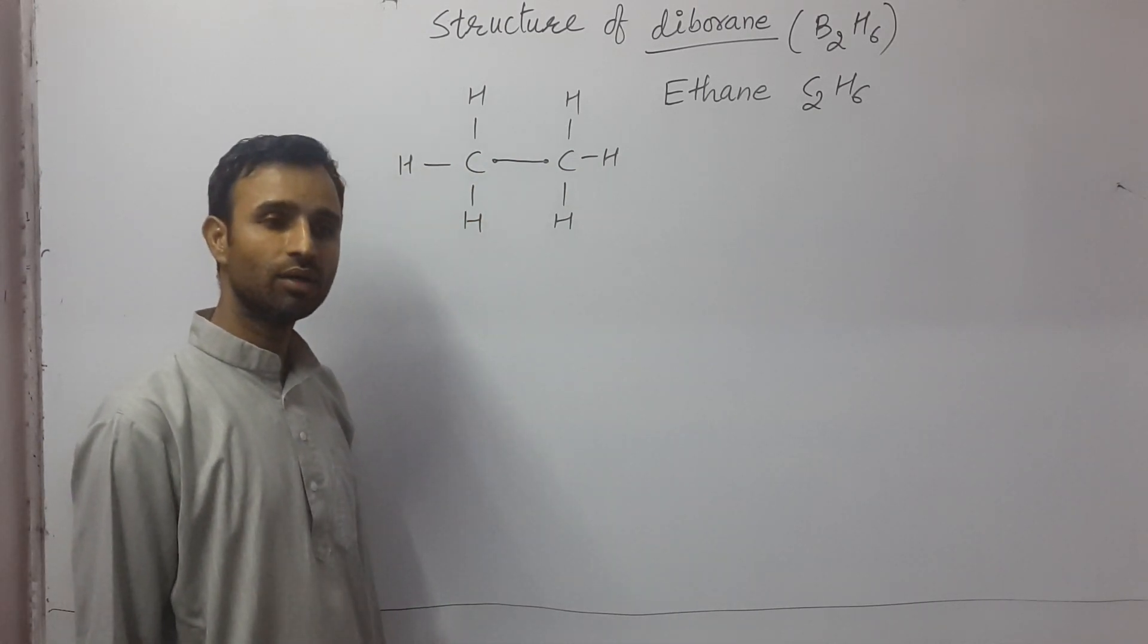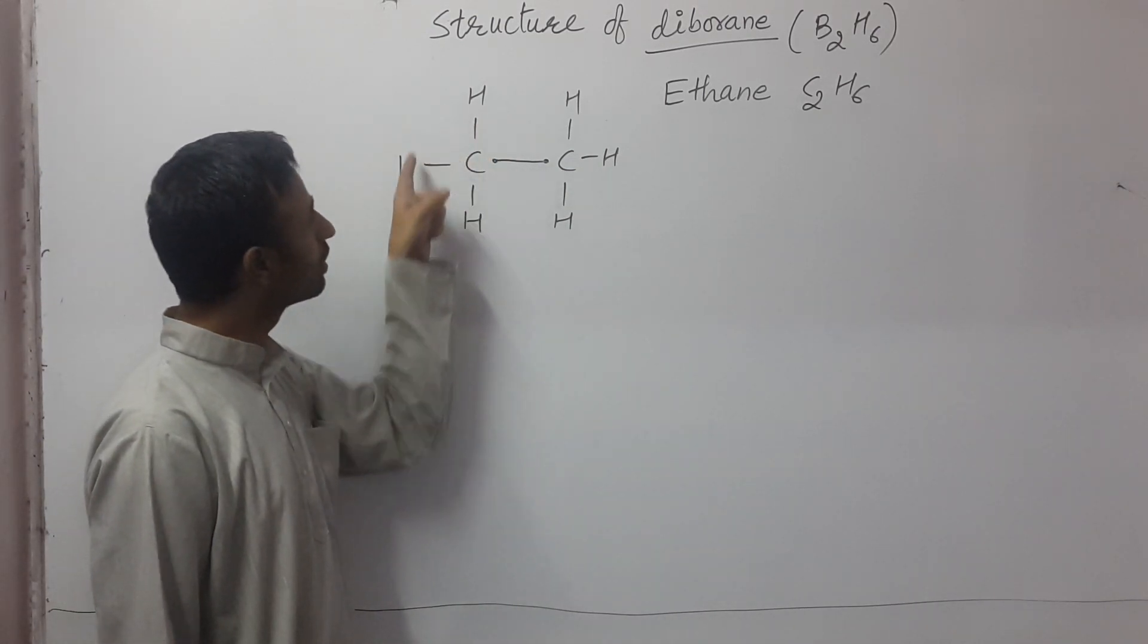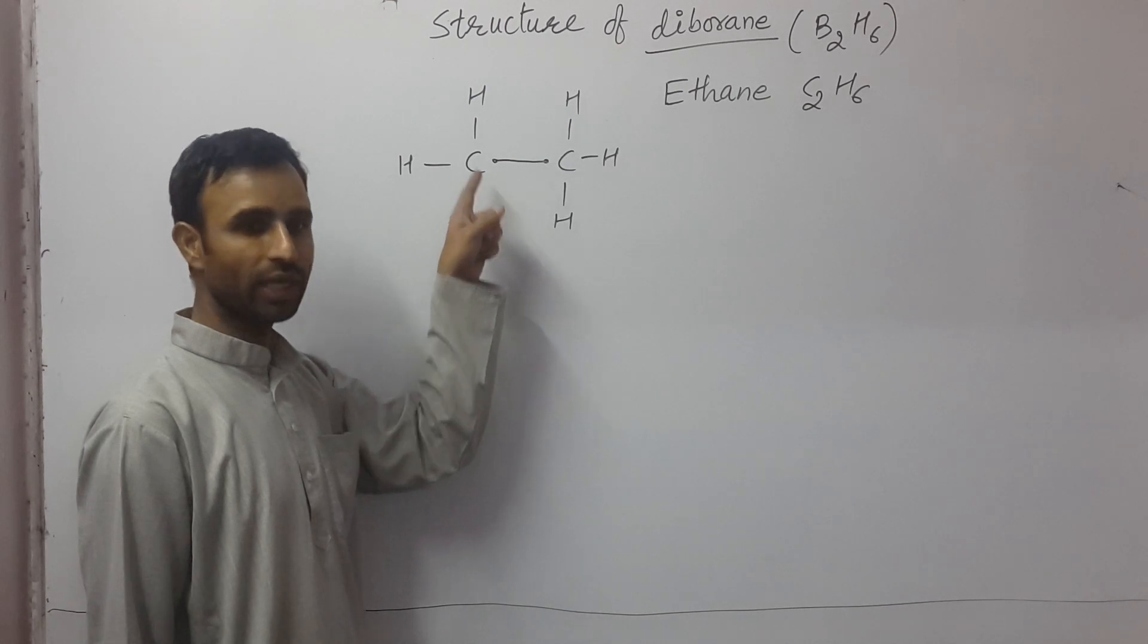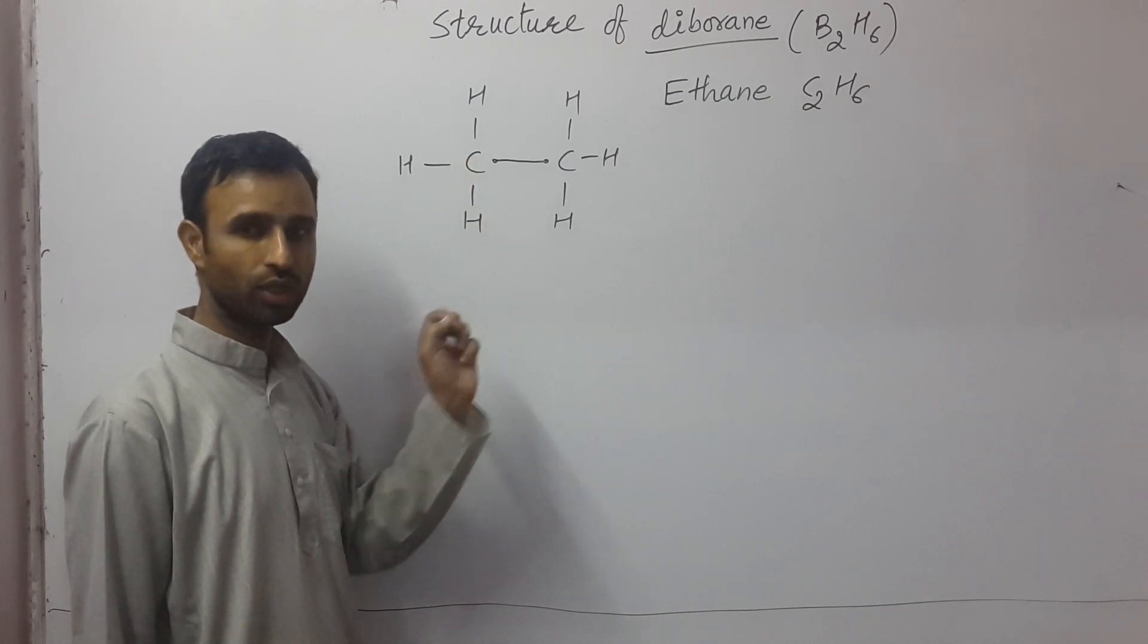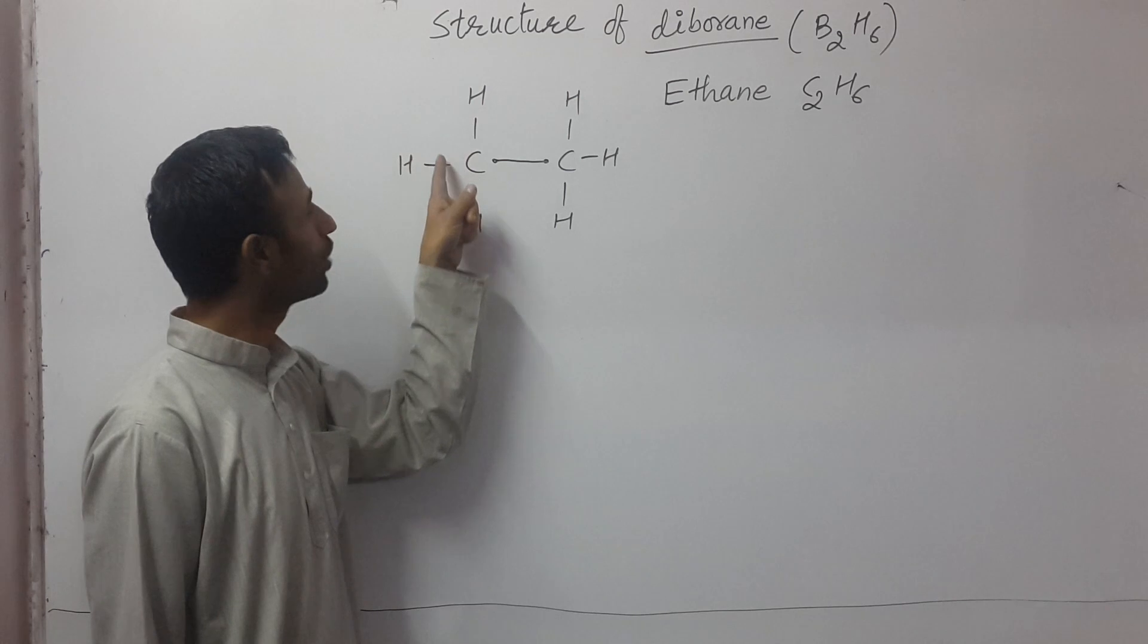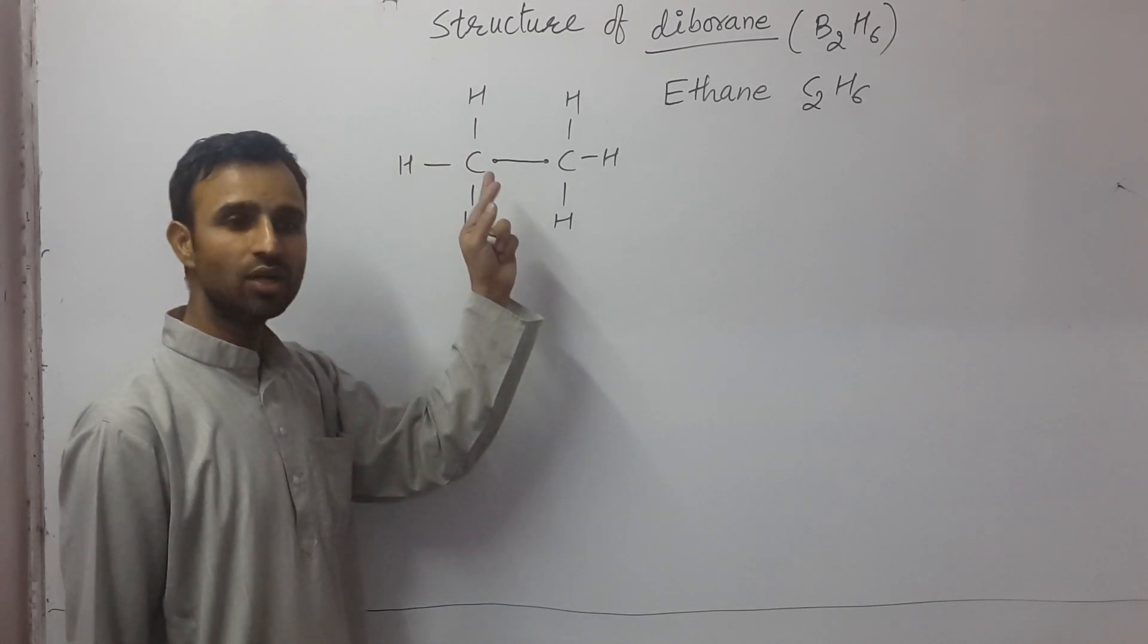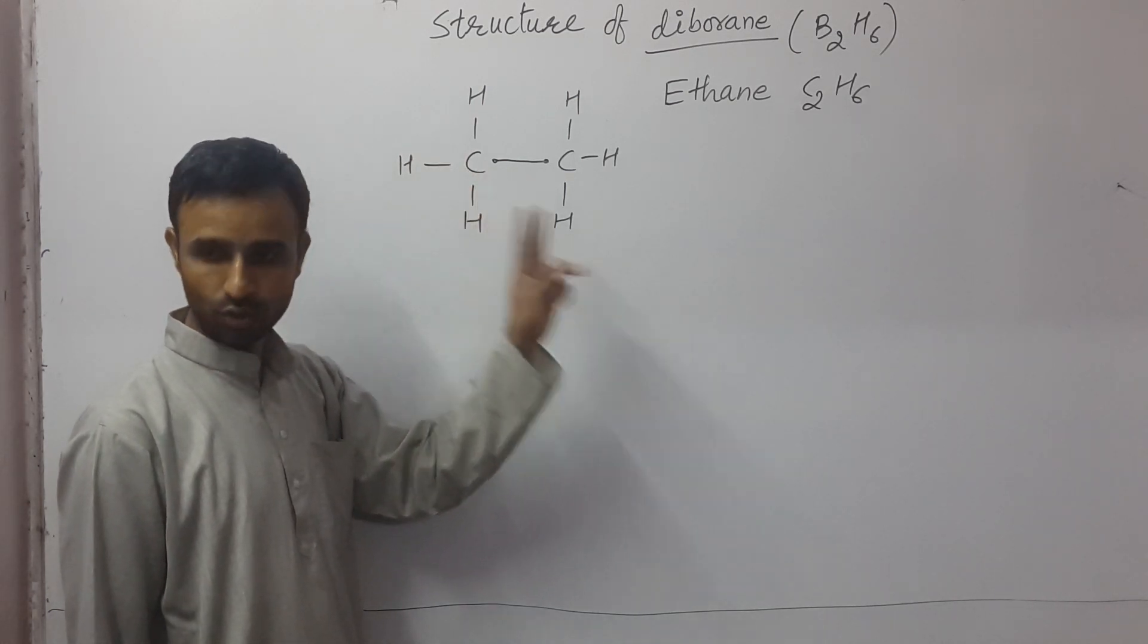So there are four sigma bonds by each carbon. So it is a two-center, two-electron bond. Each bond is a two-center, two-electron bond.